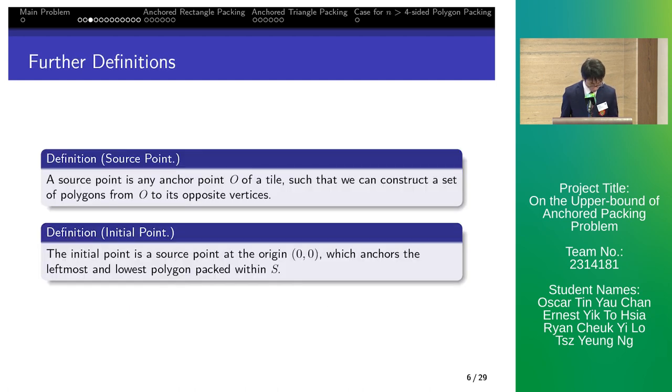We then define a source point so we can draw a set of polygons from O to opposite vertices to form a tile. The initial point is the source point at origin, which forms the leftmost and lowest polygon in shape S.